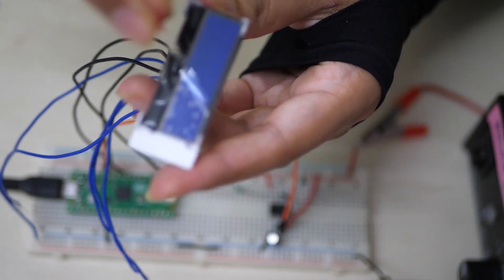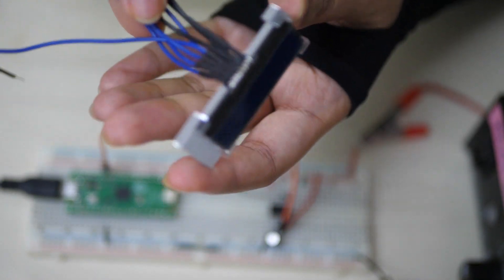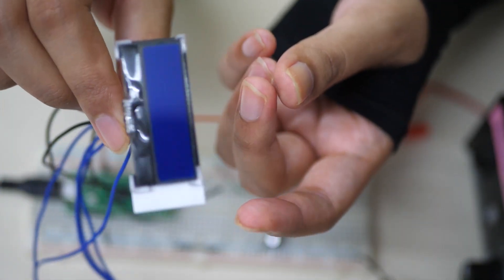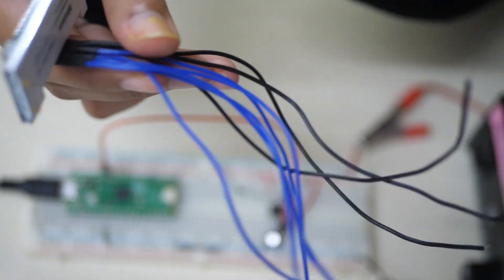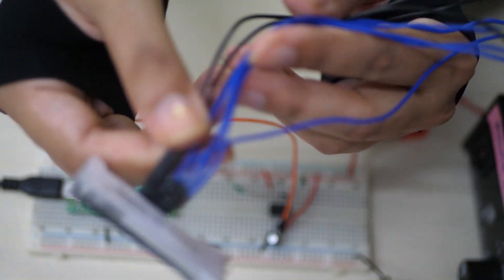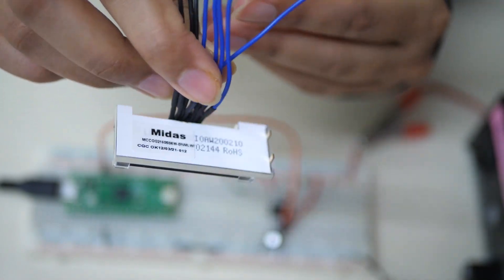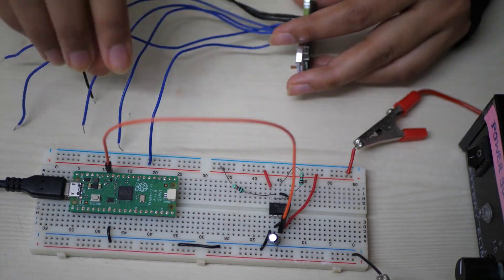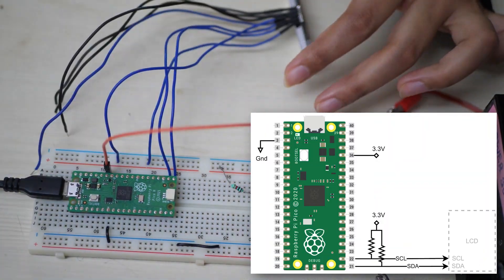This is a 16x2 LCD to display the measurements. I have already soldered wires to its pins to connect it easily on the breadboard as you see. This LCD is run by ST7032 controller which can be interfaced with Pico over I2C protocol. I'll just do the connections for I2C interfacing quickly.